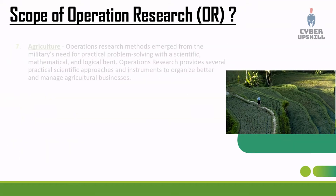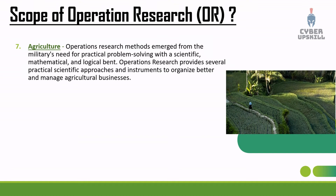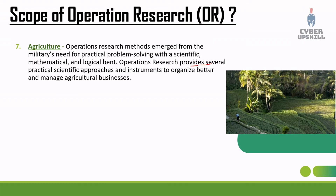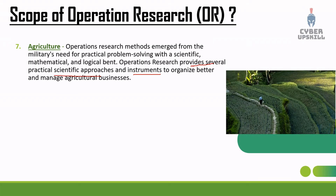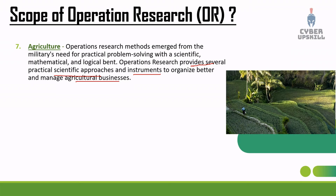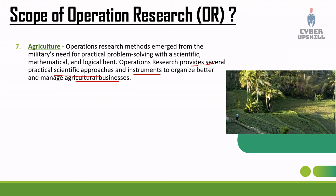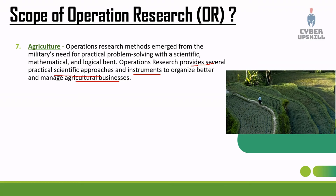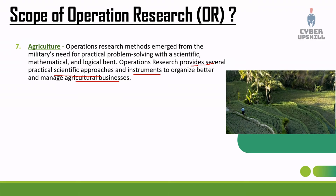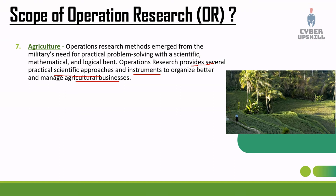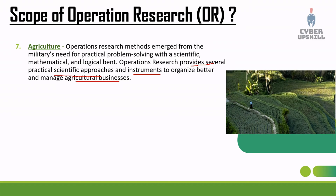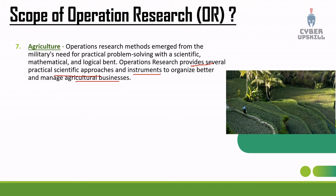The seventh scope is agriculture. Operation research provides several practical scientific approaches and instruments to better organize and manage agricultural business. Agriculture is a very important scope in operation research.